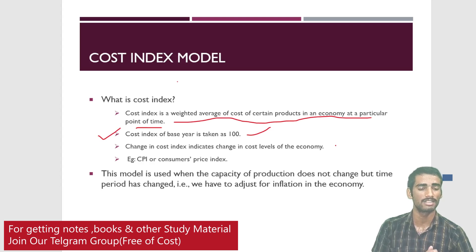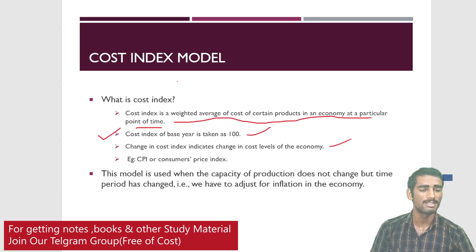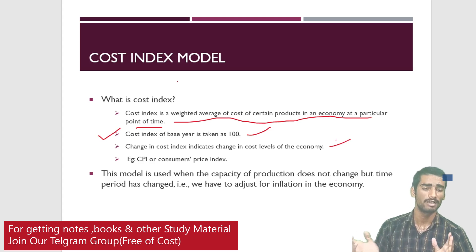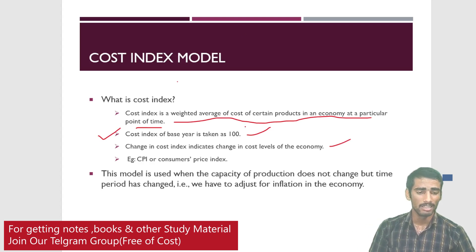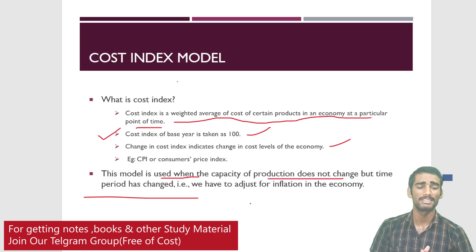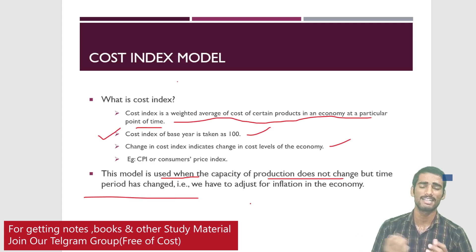Changes in cost index indicate changes in the cost level of the economy. For example, the Consumer Price Index (CPI) is an important cost index — it determines the state of the economy based on cost levels. This model is used when the capacity of production does not change but the time period has changed. So when the capacity remains the same but the time period changes, we apply the cost index model.